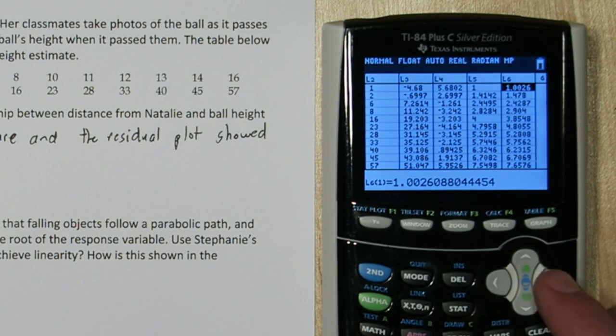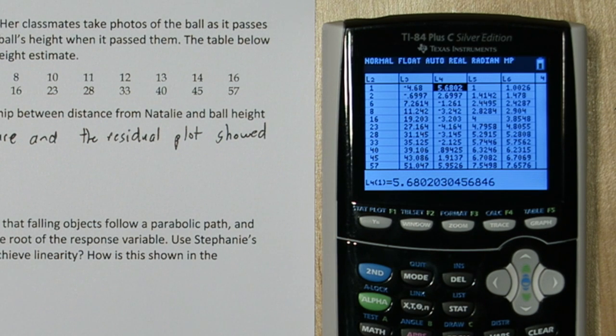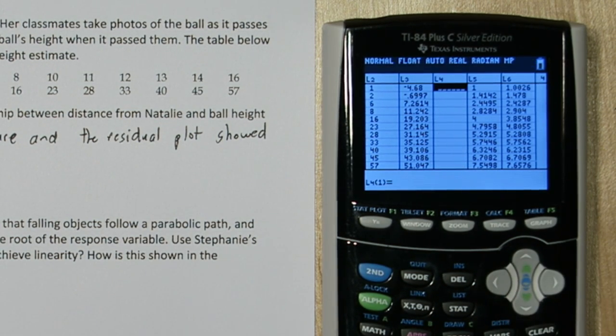Alright, here's our expected heights. I'm going to press over, oh, I'm actually out of lists. So I'm just going to use list 4, which was our original residuals. So I'm going to press up and then clear, and down. Now my list is clear.